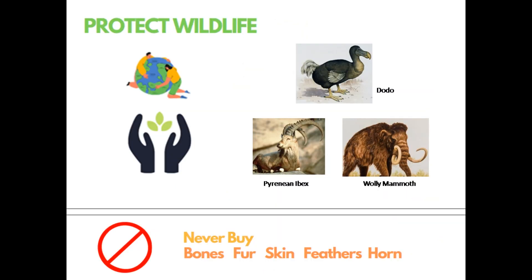In the last few decades, many species have become extinct — for example, the dodo, the Pyrenean ibex and the woolly mammoth. After the extinction of the dodo, a species of tree called the tambalacoque stopped regenerating completely. Whenever a species becomes extinct, it leaves a scar that affects the entire ecosystem. It is highly crucial that we protect our wildlife. Hope this lesson was useful — see you in the next video.